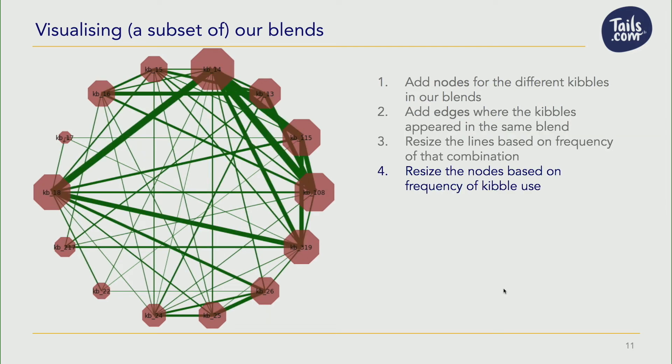So now we resize it. I've scaled the width of the lines and the size of the nodes to represent the frequency of that combination or that kibble appearing in bags together. Now you can start to see some patterns of where our high-use common combinations are and where our more rare ones are.